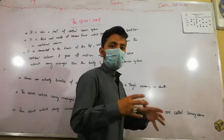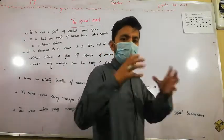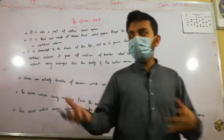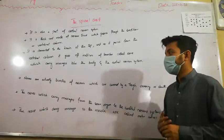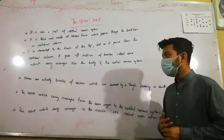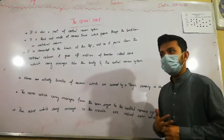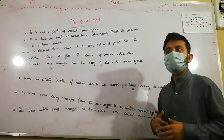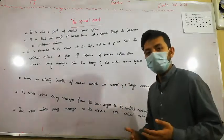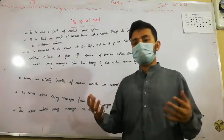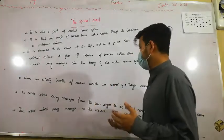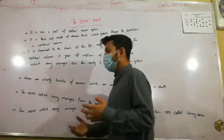Millions of branches emerge from the spinal cord — we call these nerves. What are nerves? Nerves are actually bundles of neurons. They are bundles of neurons.